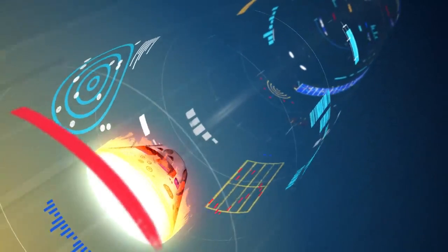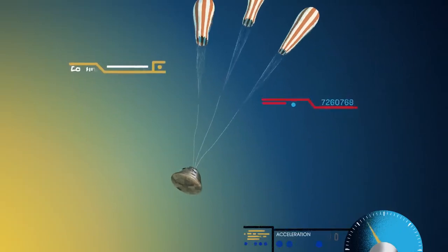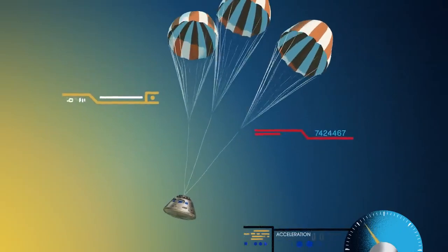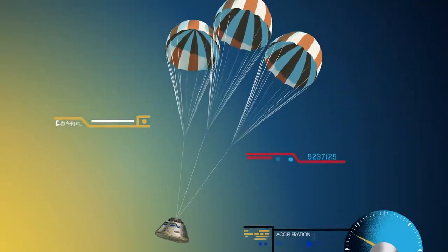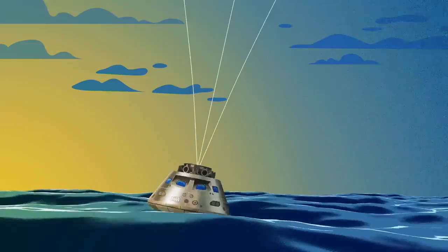With the Orion now at just 300 miles per hour, a series of parachutes uniquely tested and produced for this moment deploy, decelerating the craft to just 20 miles per hour for splashdown.